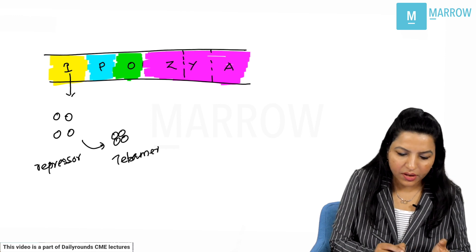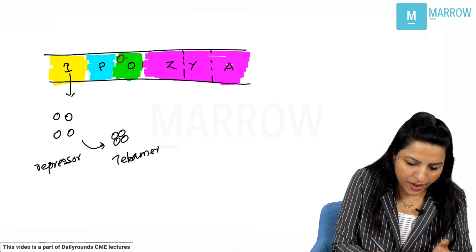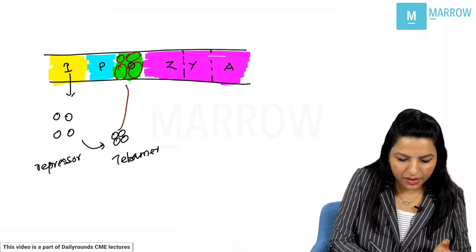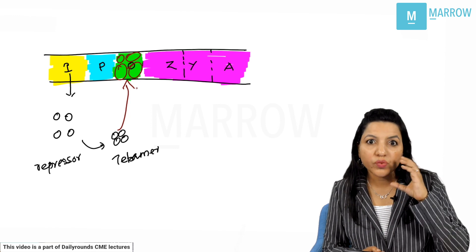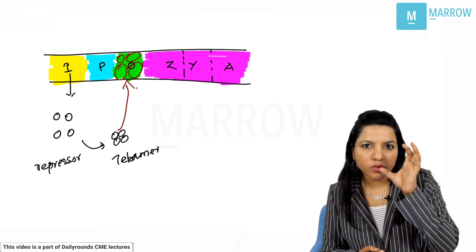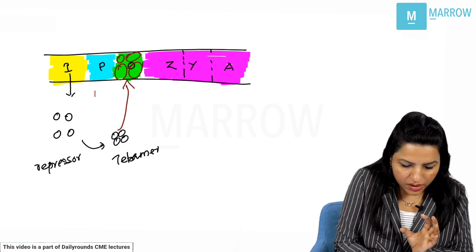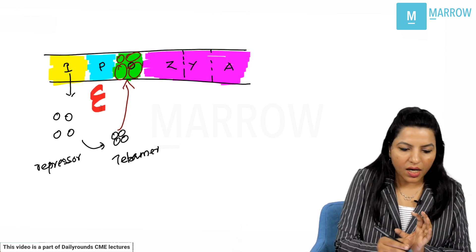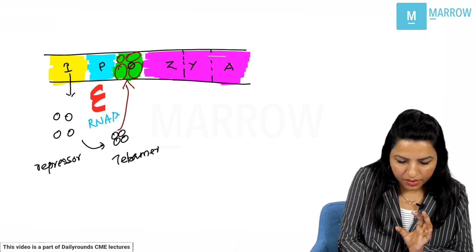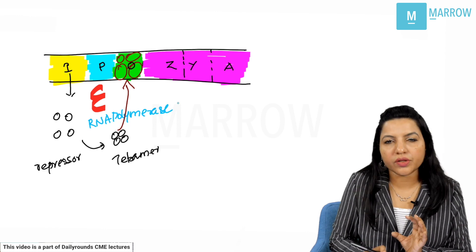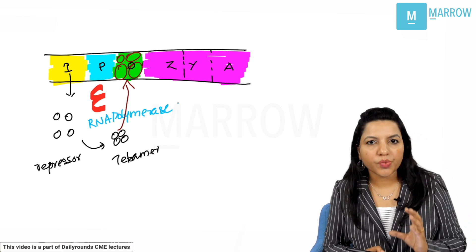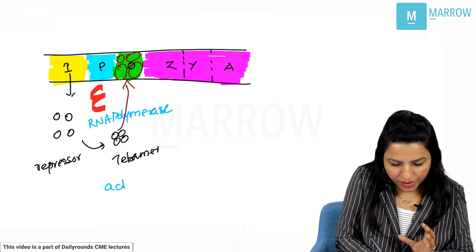In this tetrameric state, the repressor goes and binds to the operator site. What is shown here is the tetramer repressor binding to the operator site. Even though RNA polymerase is present, normally inside the cell of E. coli the repressor protein is active — this is called the active repressor.